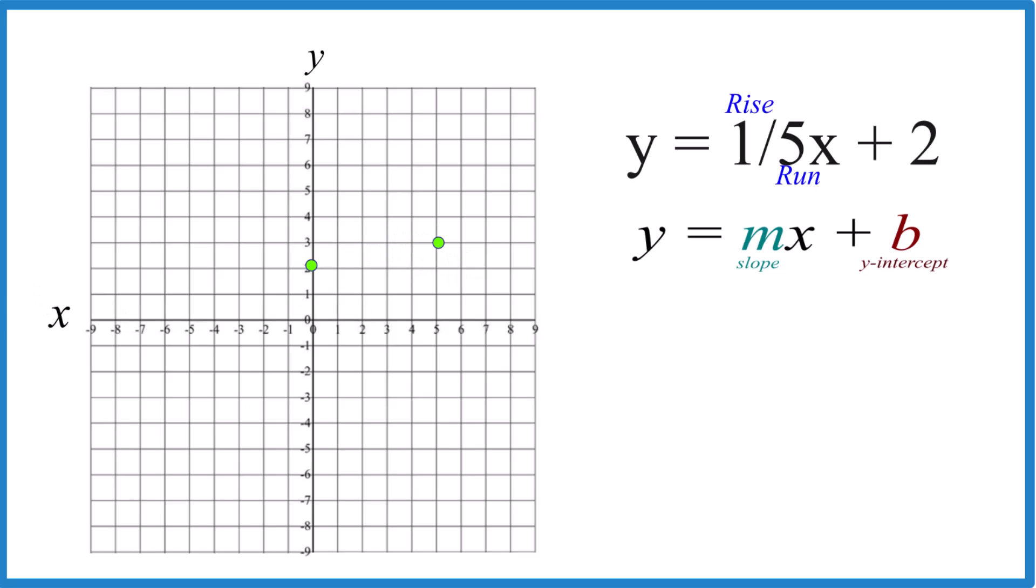Let's do it again. We'll rise 1 and go over 1, 2, 3, 4, 5. That's off our graph, so let's go back to the y-intercept, go in the opposite direction.